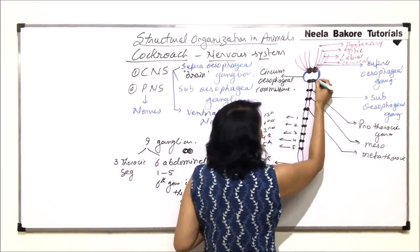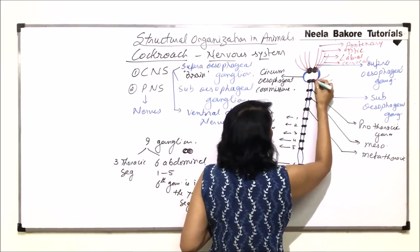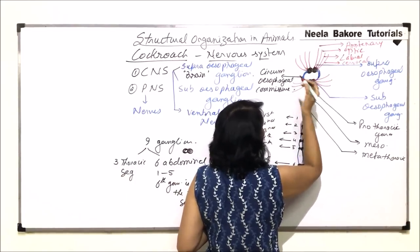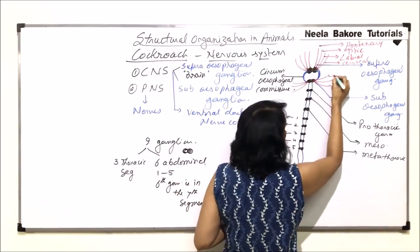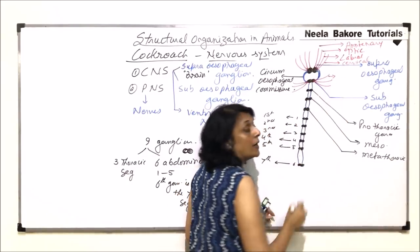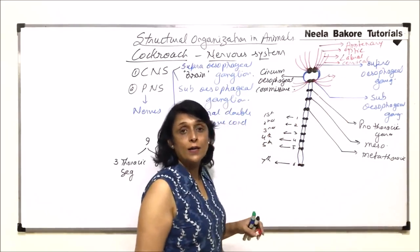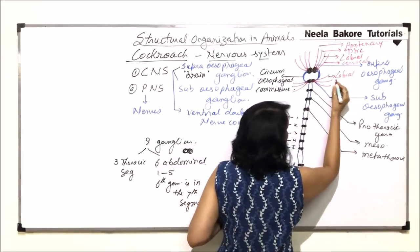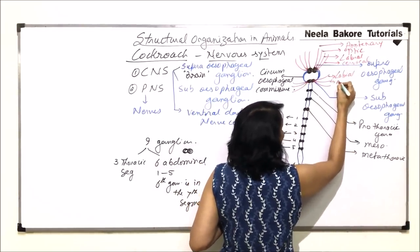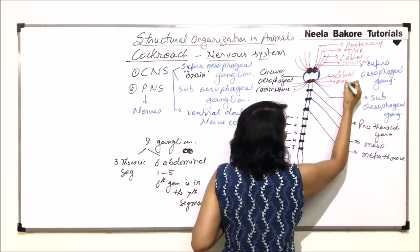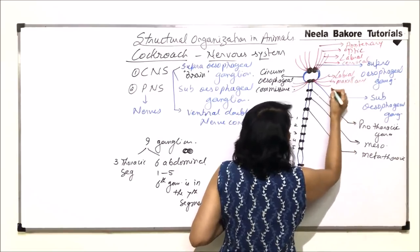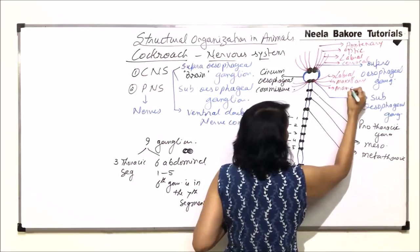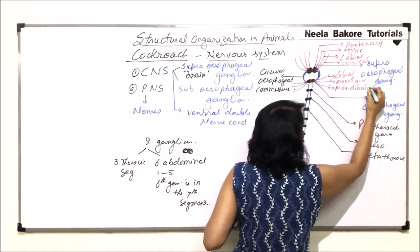From the subesophageal ganglion arise three pairs of important nerves. The first goes to the lower lip — the labia — and is known as the labial nerve. The second goes to the maxilla and is known as the maxillary nerve. The third goes to the mandible and is known as the mandibular nerve.